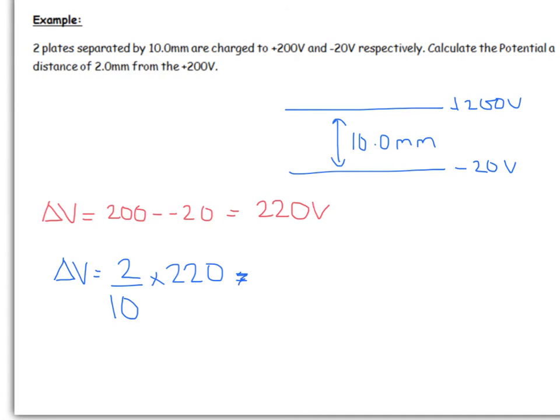I won't calculate it at this stage. The potential at 2 millimeters will be the starting potential when it's 0 millimeters, so 200, and it will be subtracting this value here, and that gives you a potential of 1.6 times 10 to the 2 volts. This was actually 2.0 and this was 10.0, so we've got two sig figs here, so your answer should be two significant figures, which this is.